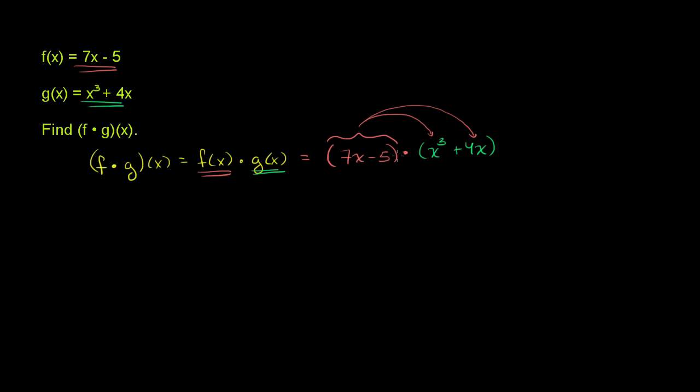So when you multiply 7x minus 5 times x to the third, you get 7x minus 5 times x to the third. And then you have plus 7x minus 5 times 4x.